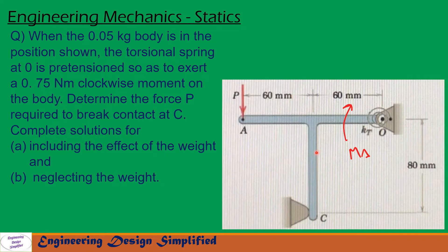In this problem, given is a body of 0.05 kg — a T-section arranged as shown. At point O there is a torsional spring that will exert a clockwise moment of 0.75 Nm, and at a distance of 120 mm from O there is a force P acting vertically downwards. There is a contact at point C.